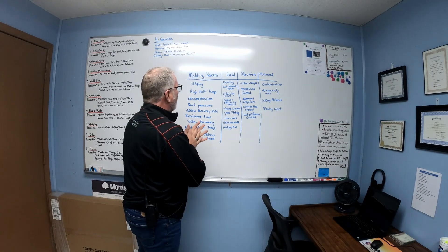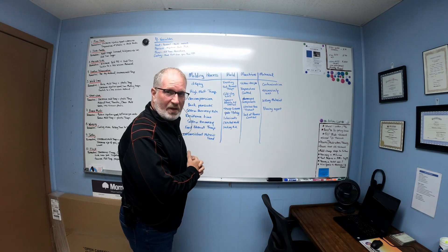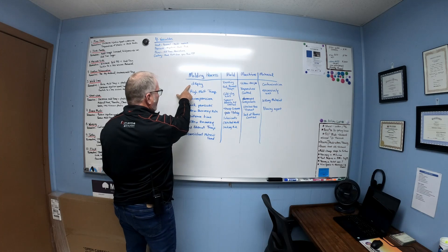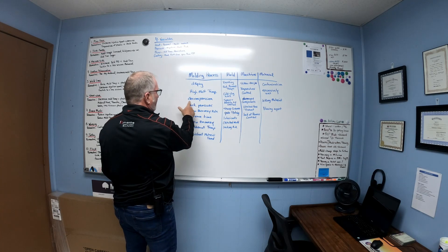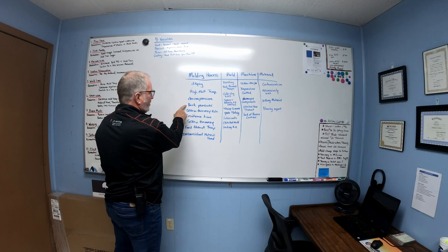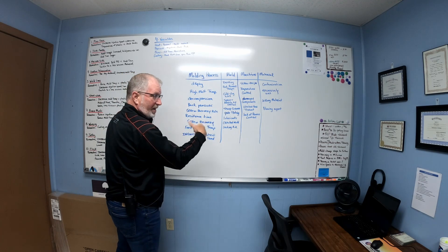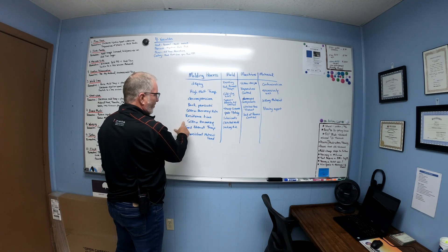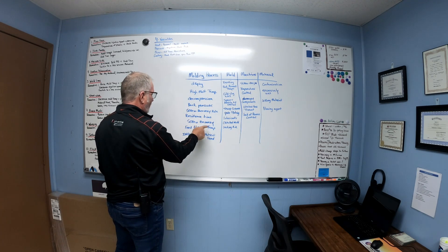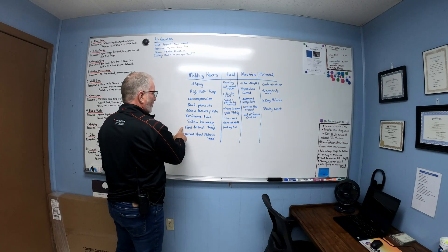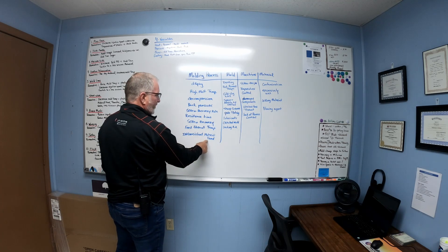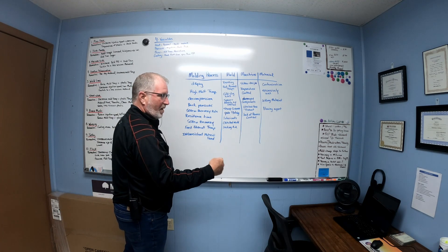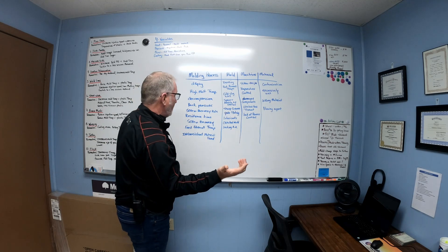These are the four variables for splay. Starting with the molding process side: drying the material, high melt temperature, decompression, back pressure, screw recovery rate, residence time (how long material sits in the barrel), feed throat temperature, and inconsistent material feed. You might be watching your metering time and it could be jumping all over the place — that could be a problem.